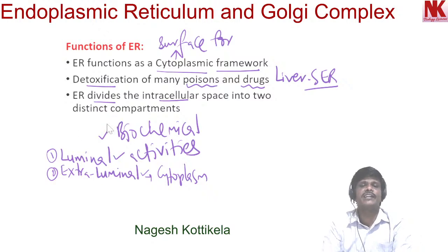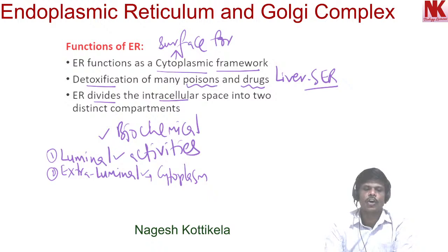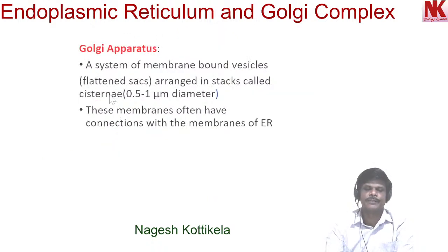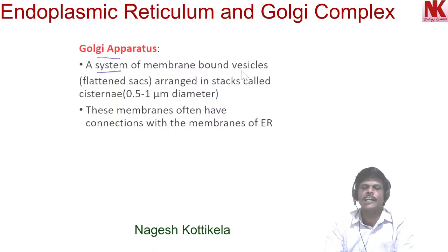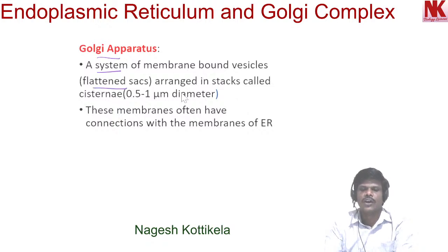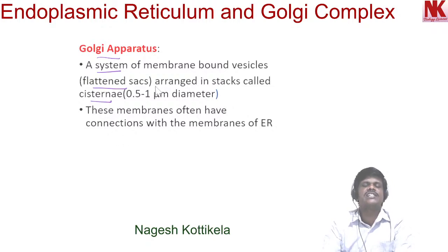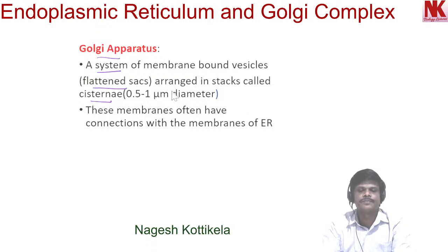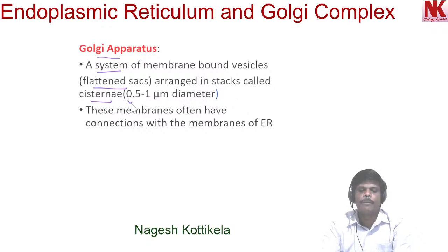Moving to the next topic: Golgi apparatus. Golgi apparatus is a system of membrane-bound vesicles. These vesicles are flattened sacks arranged in stacks called cisternae. When these flattened sacks are arranged in parallel stacks, they are called cisternae, and each cisternae has a diameter of 0.5 to 1 micrometer.